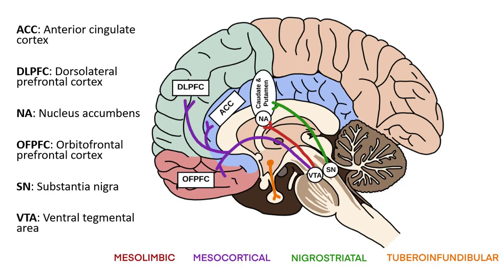And the tuberoinfundibular pathway, which extends from the hypothalamus to the anterior pituitary. The ventral tegmental area and the substantia nigra are the primary areas of the brain responsible for the production and storage of dopamine.